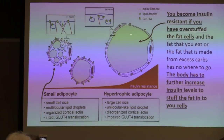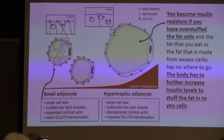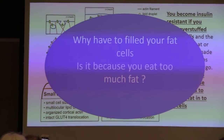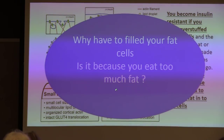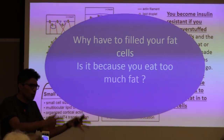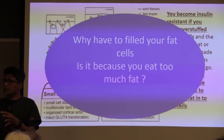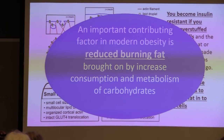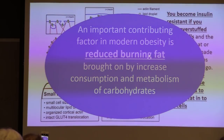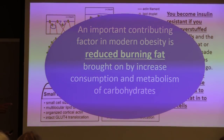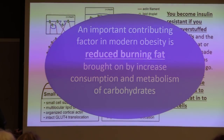You become insulin resistant if you have overstuffed fat cells. The question is: why have we filled our fat cells — is it because we eat too much fat? The important contributing factor to modern obesity is reduced fat burning. It's not because you eat too much fat; you're not burning fat efficiently, and that's because you consume a large amount of sugar and carbohydrates.